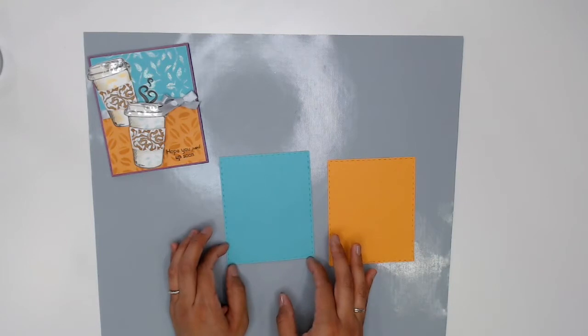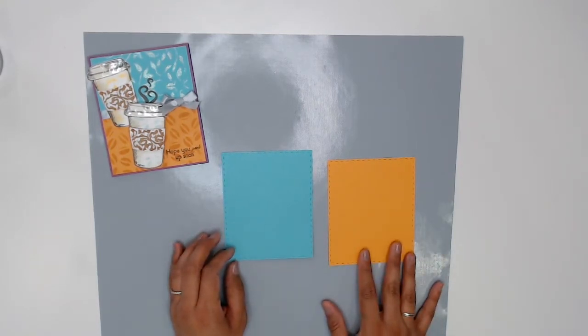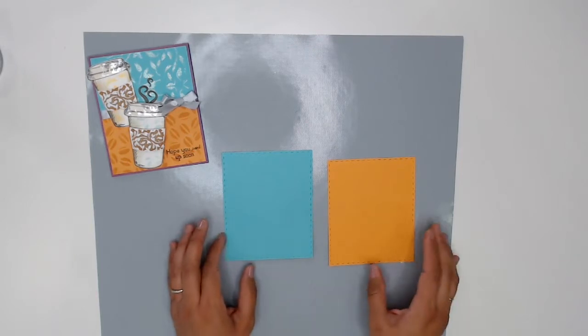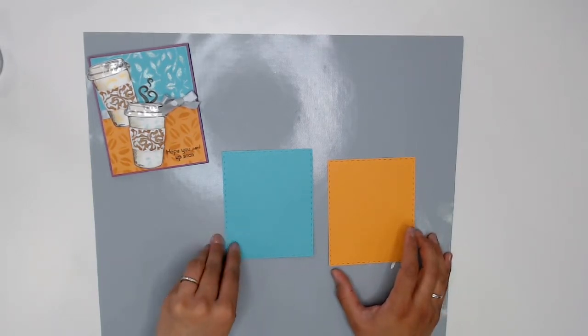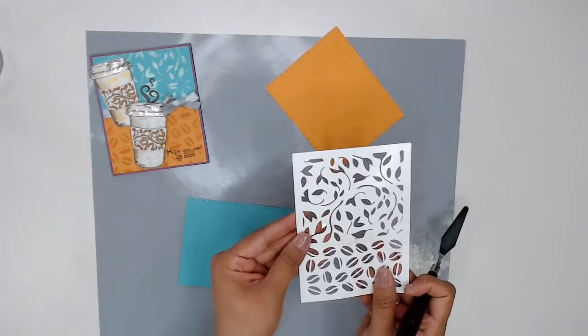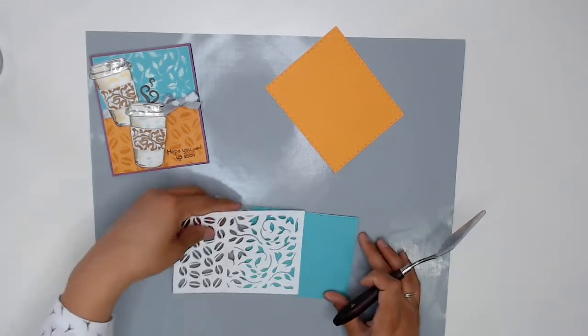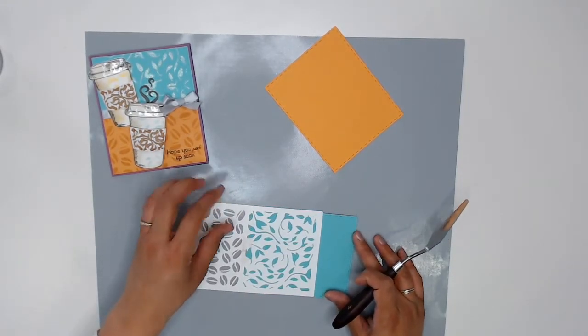To start off my card I have two pieces of cardstock, one in aqua and one in orange and I've die cut these with a frame, a nesting frame die set, and I have these ready to go so that I can use my coffee break stencil on them. I'm going to use the leafy part of the stencil so that I can stencil on the upper half of this cardstock.